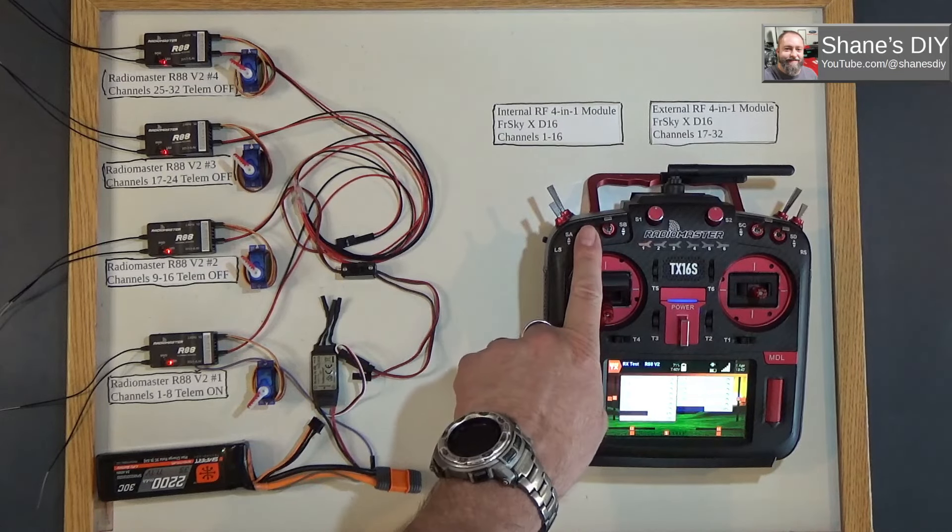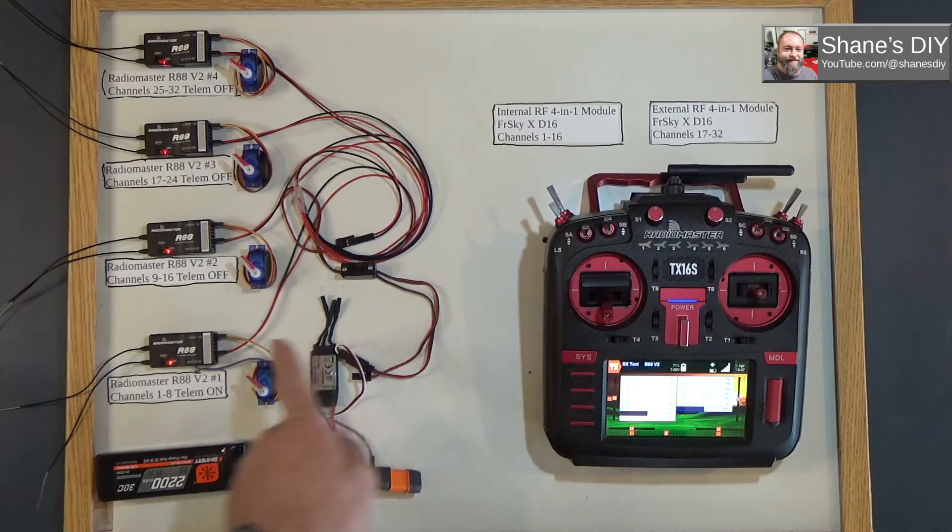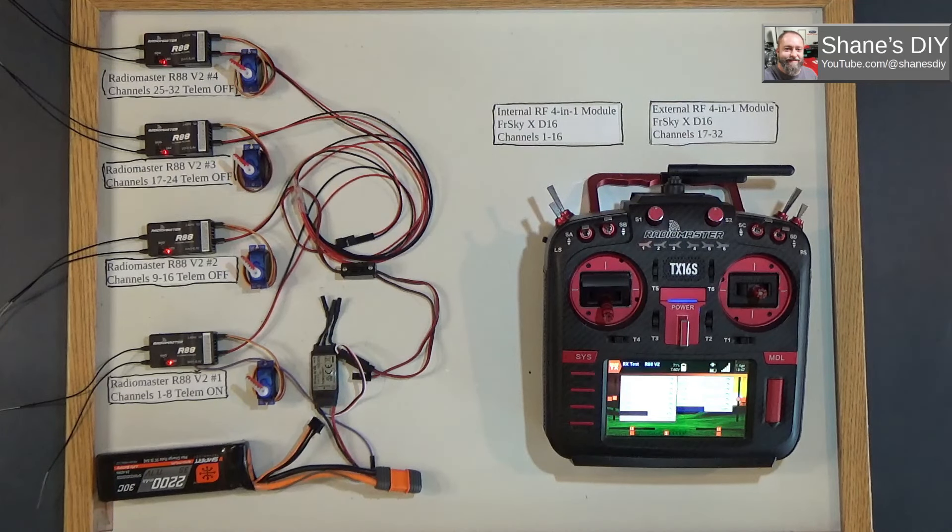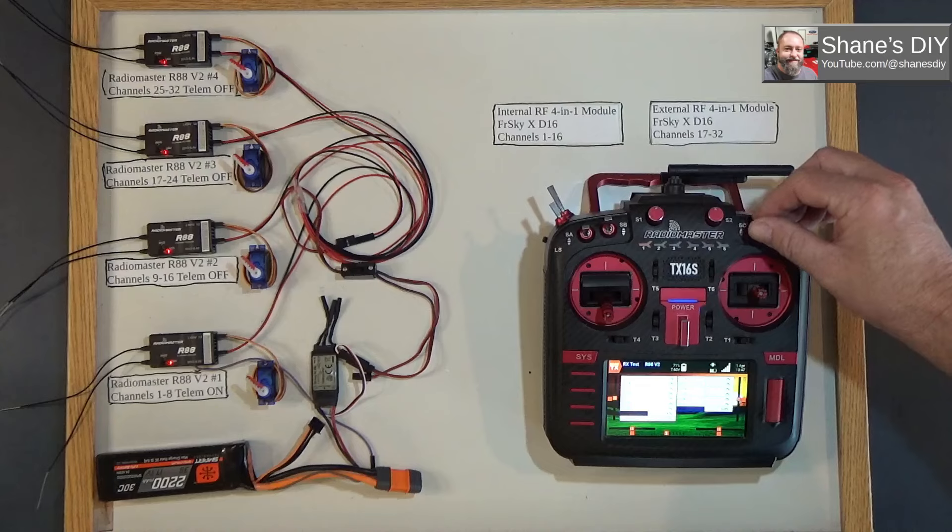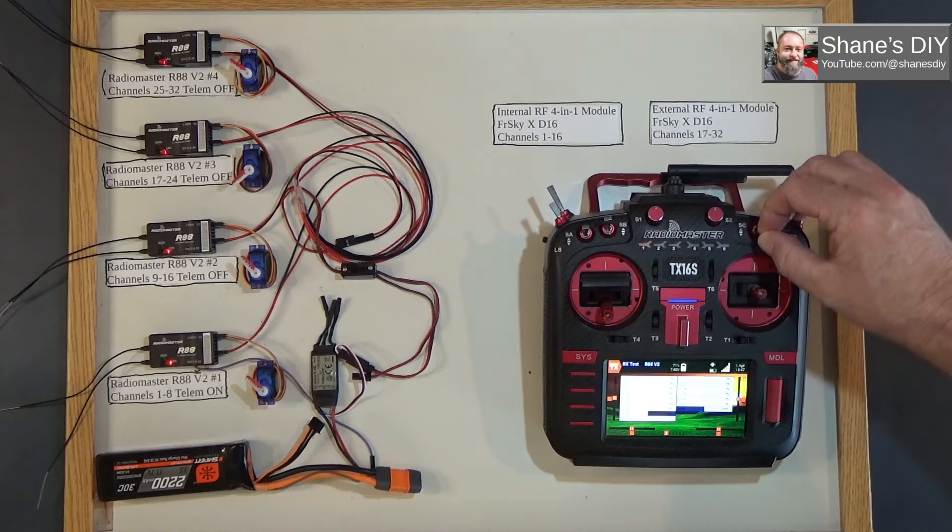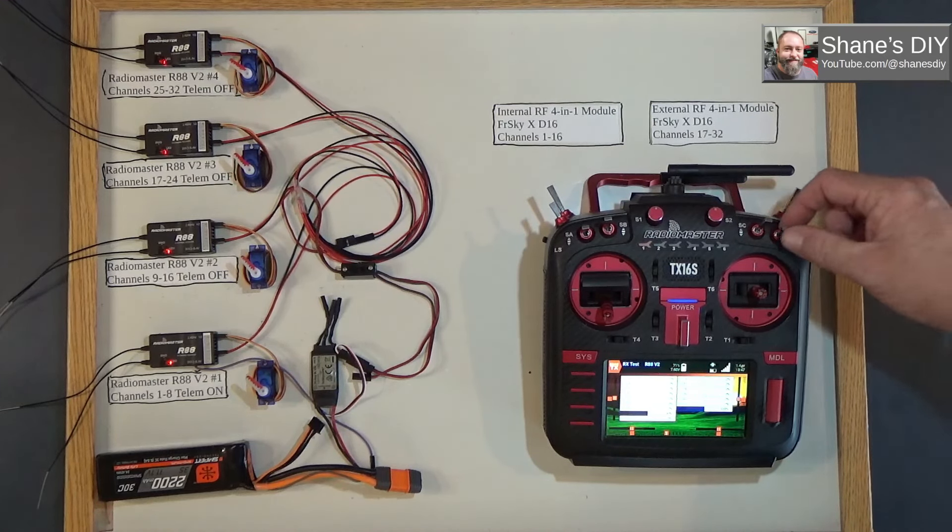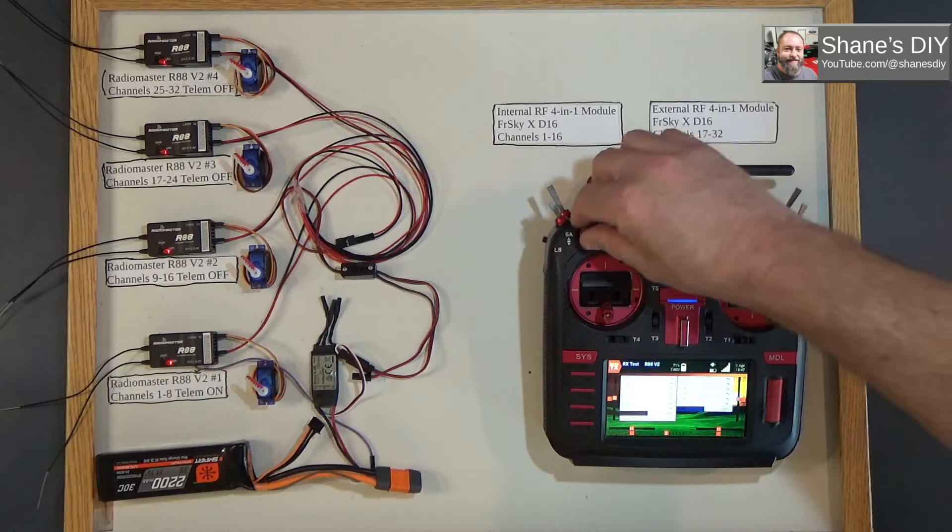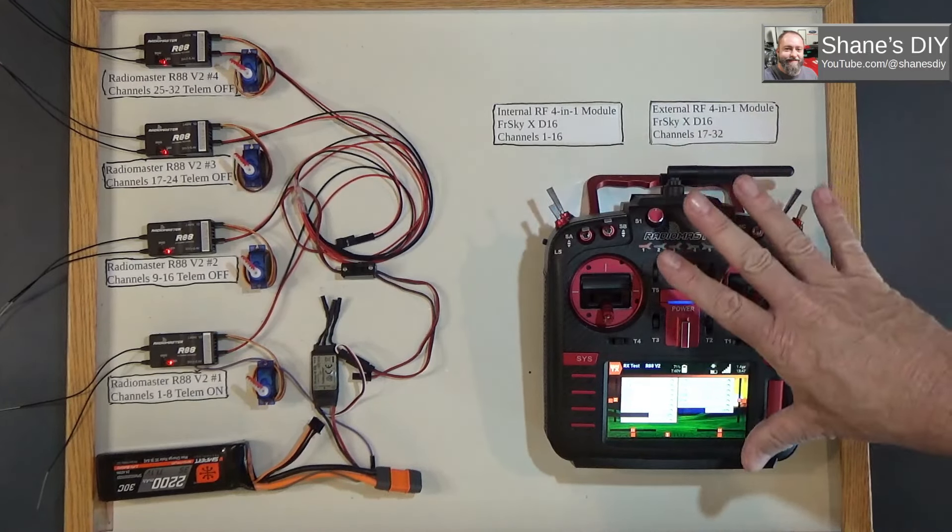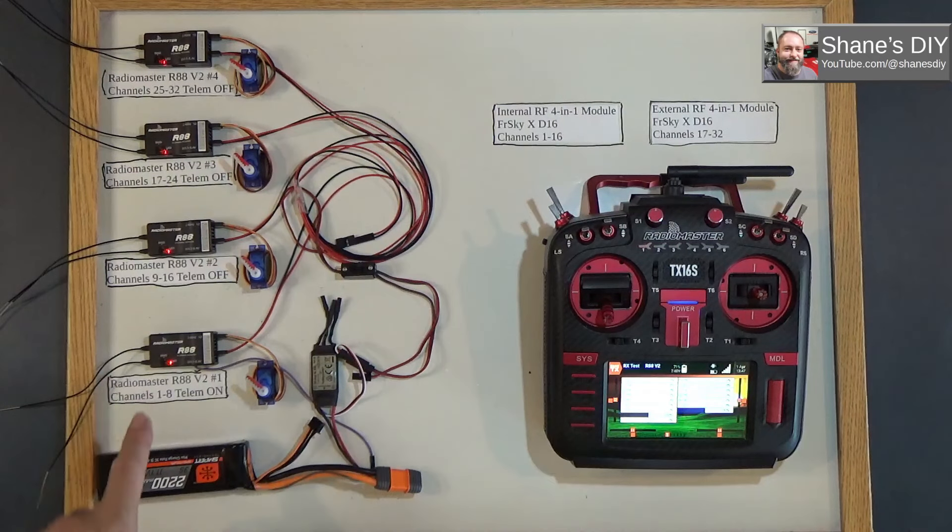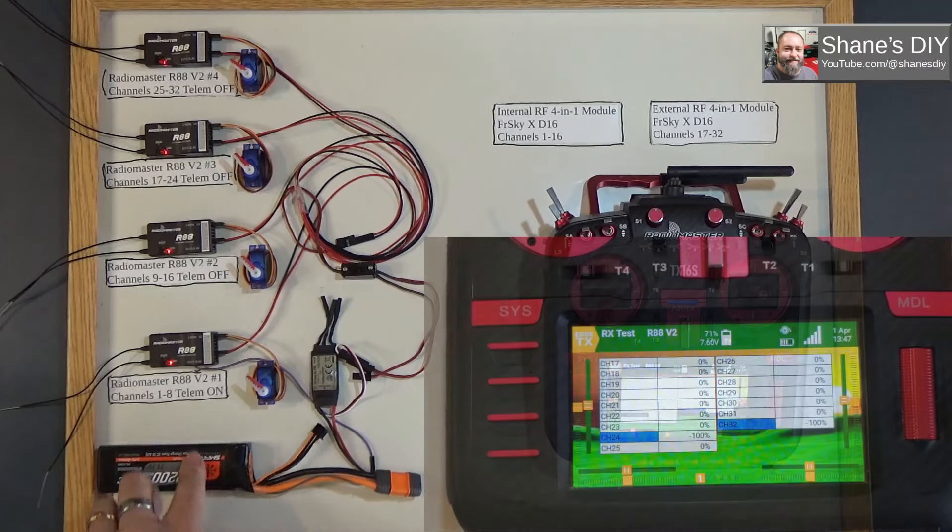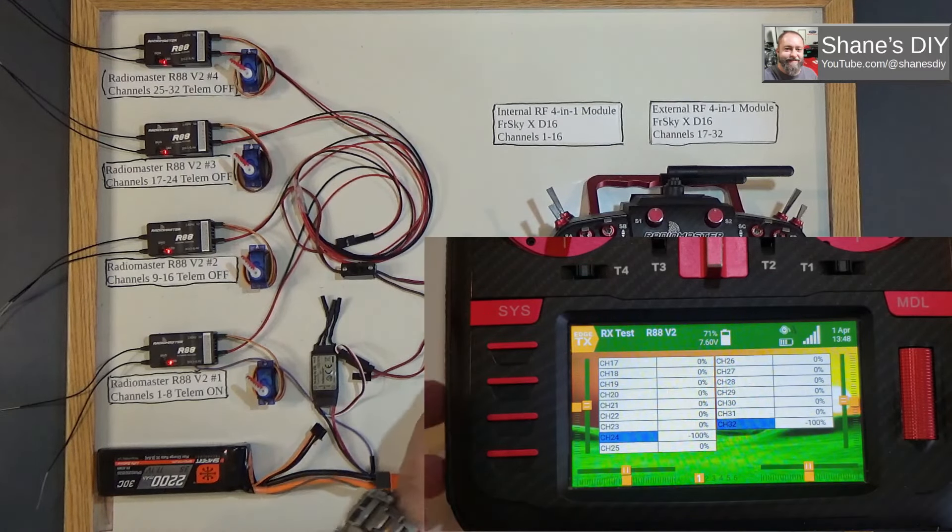You can see I've got, I can control—SA controls that servo, SB controls channel 16, SC controls channel 24, and SD controls channel 32. So you can see I've got all one radio, two modules, I've got connected bound up to four different receivers at the same time with the unique channels. Let me go through the process and show you how you do this.